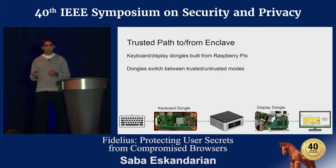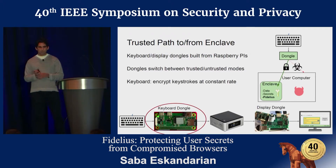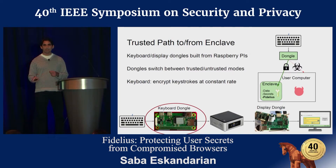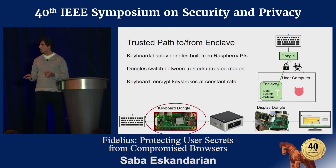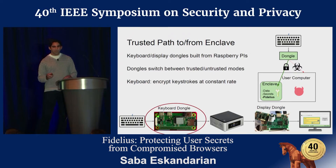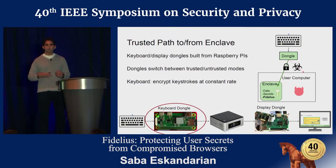When switching to trusted mode for the keyboard, the dongle begins to simulate a second device that sends a constant stream of encrypted packets into the enclave, encrypted with a key shared between the dongle and the enclave. They're sent at a constant rate so as not to reveal typing patterns to an attacker. If a user presses a key, the encrypted packet contains that key; if not, empty packets are sent.